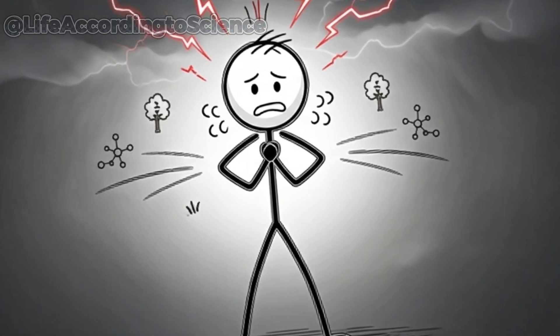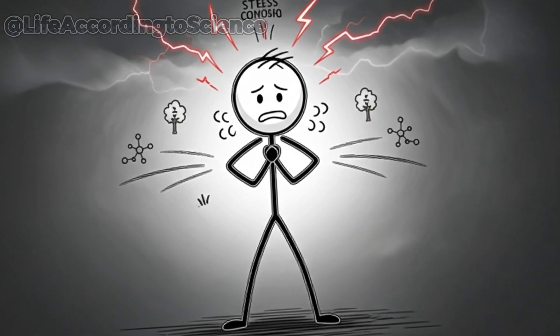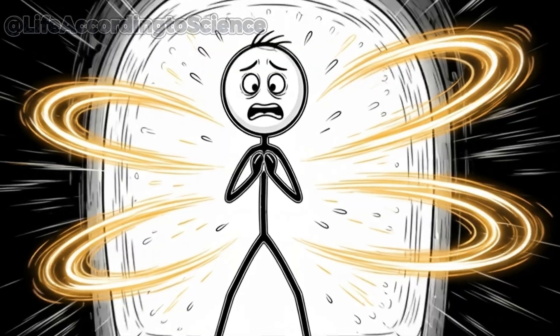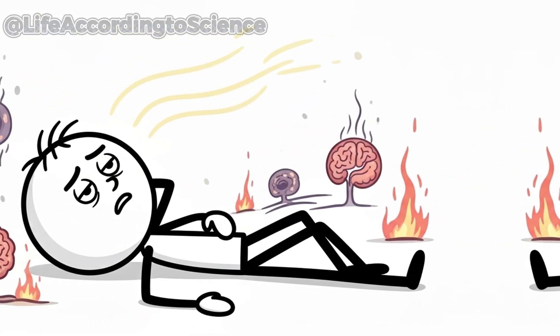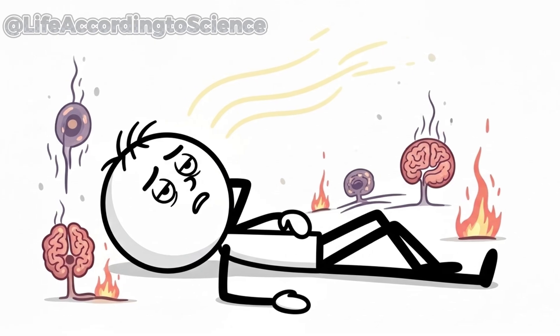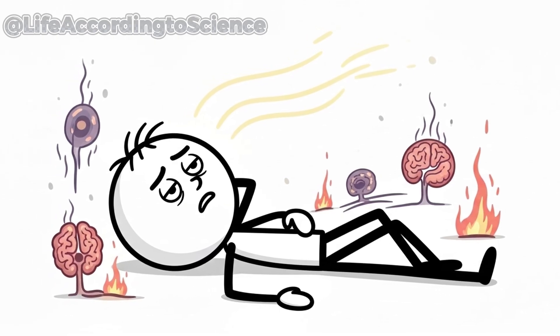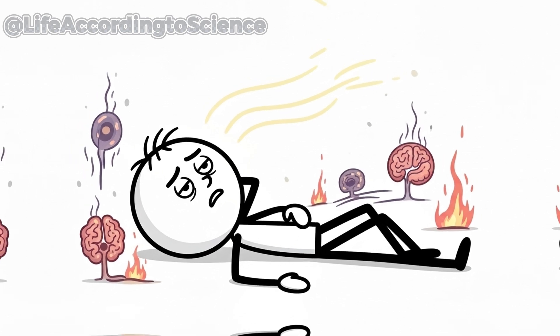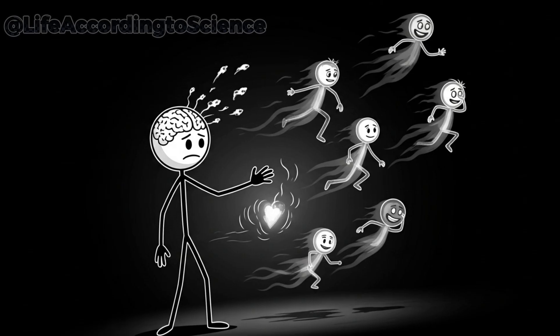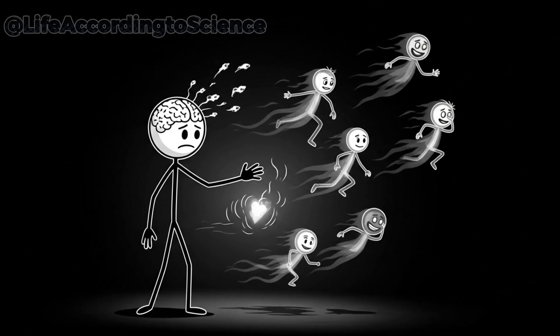Meanwhile, stress hormones like cortisol skyrocket. The body enters panic mode, flooding your system with adrenaline in an attempt to keep vital functions running. But that surge can only last so long before exhaustion sets in. The human brain is remarkably resilient, but without water, its power fades rapidly. By this point, you're not just thirsty—you're losing the ability to be yourself.